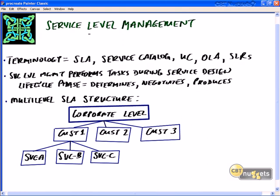Service level management is really a liaison between an IT service provider and the customers. One of the most common components of service level management delivery is the SLA — the service level agreement — a written agreement between a service provider and the customer documenting the agreed level of service. Along with that we have the service catalog, which is like a menu of available IT services: the default levels of service, the options, descriptions of processes, how customers can use them, and of course costs and pricing.